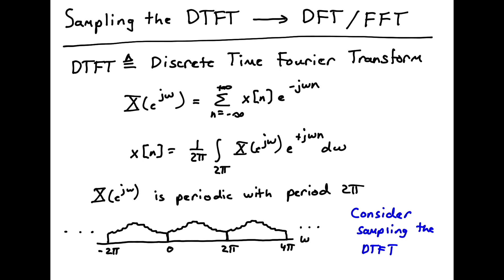As you recall from previous discussions, the discrete time Fourier transform is simply the Fourier representation of a discrete time signal x of n. This is how we compute the forward transform, and this is the inverse transform. The key thing to remember is that for discrete time signals, the Fourier transform is periodic with period 2π, so this transform repeats every 2π. This is the transform we're going to consider sampling.